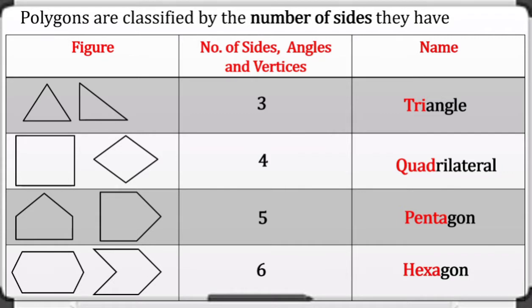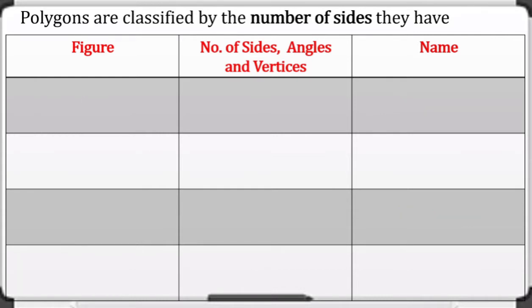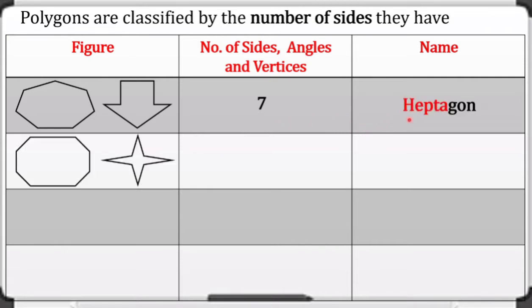From the word 'hexa' which means six. The other polygons: this figure has seven sides, seven angles, and seven vertices, and we call this a heptagon.